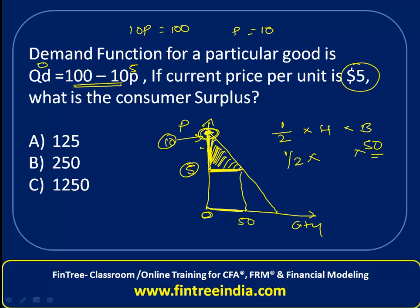The vertical distance between the intercept (10) and the current price (5) is 5. So one-half times the height of 5 times the base of 50 gives a consumer surplus of 125. Therefore the correct answer is option A.